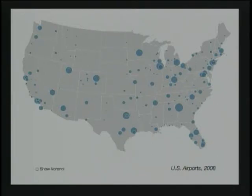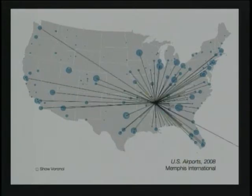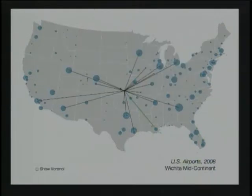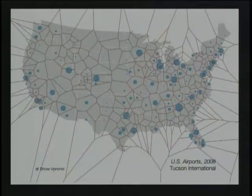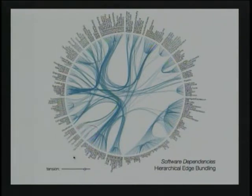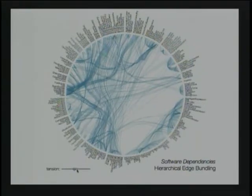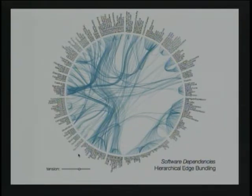Geographic data is also common — here we see all airports in the United States, interactively querying where they fly to, showing the network of connections. As I move the mouse cursor, the nearest element is automatically selected using a Voronoi tessellation — a technique known as the bubble cursor. Another representation shows software dependencies within a large project, where each node is a class grouped by package. Edges can be bundled to aid interpretation, allowing us to understand not just individual dependencies but how dependencies group across modules.